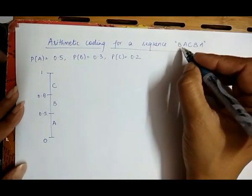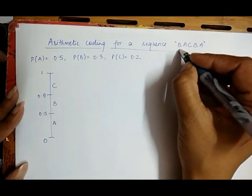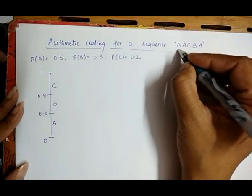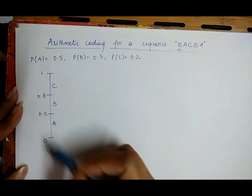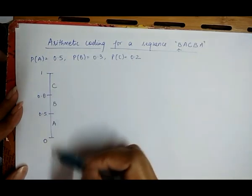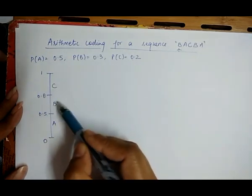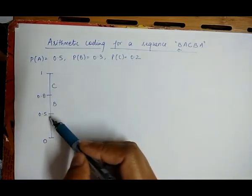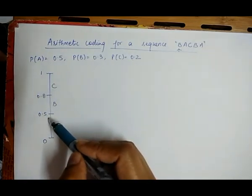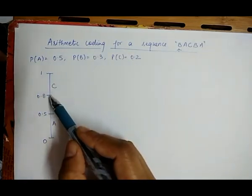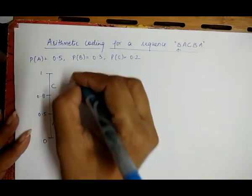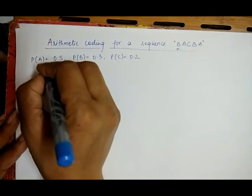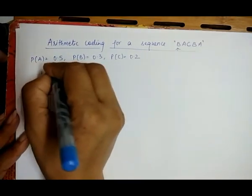The first symbol to be encoded is B. In the given range, the symbol B has a lower limit of 0.5 and an upper limit of 0.8. This is Step 1.